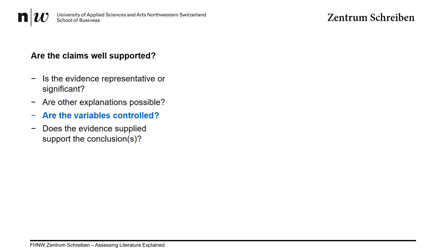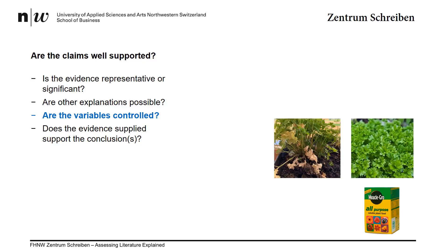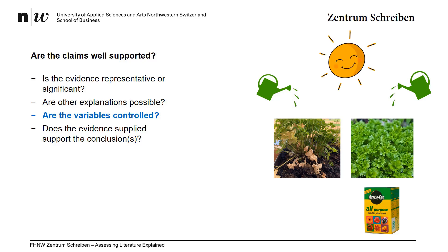The third thing we'd like to look at is whether or not all the variables are controlled. Say, for example, we want to test the effectiveness of Miracle-Gro on parsley. You give one group of parsley Miracle-Gro, but not to another. Both groups are given the same amount of water, so we can rule that out as a factor. However, what about sunlight? Could a difference in the sunlight have affected the results? When assessing literature, you should consider and potentially comment on whether potentially influential variables were controlled.